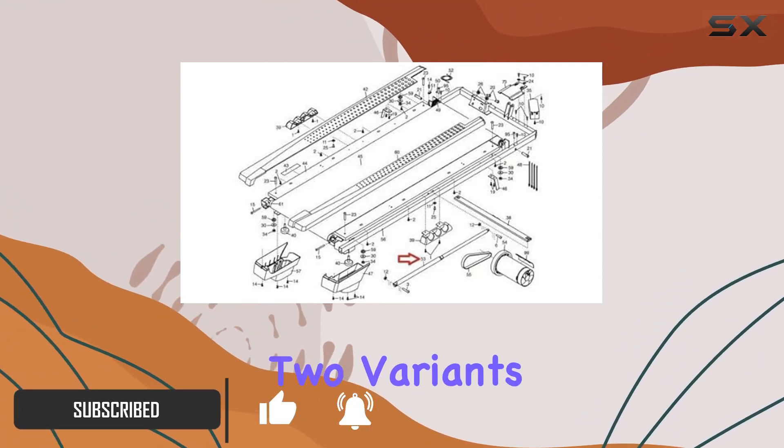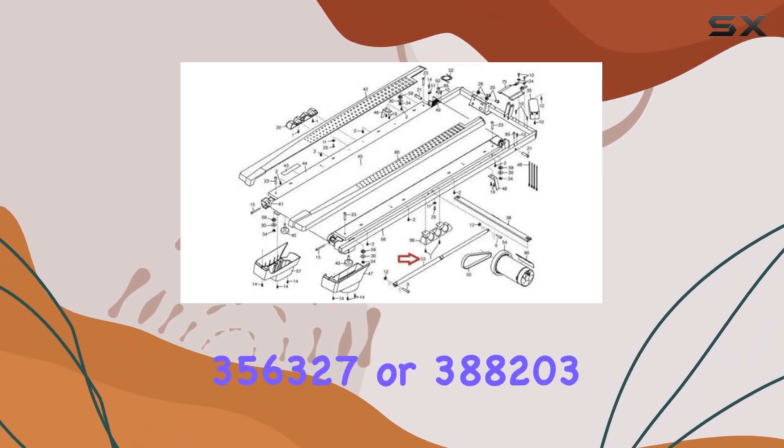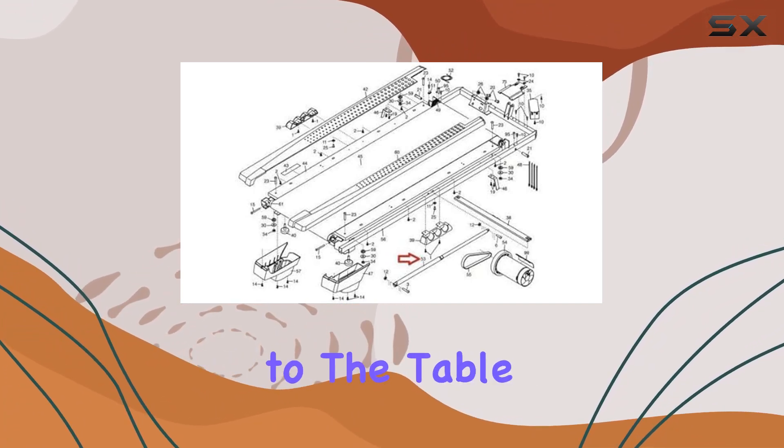The part, available in two variants with part numbers 356-327 or 388-203, goes by the name shock ASSY and brings an adjustable height feature to the table.